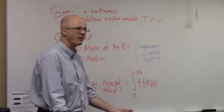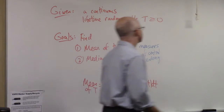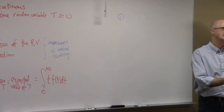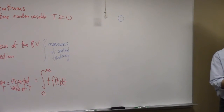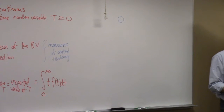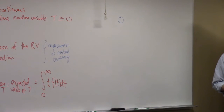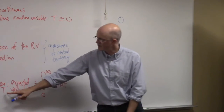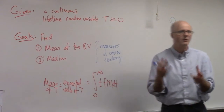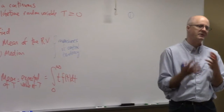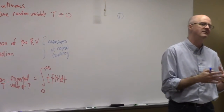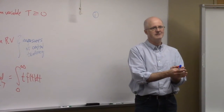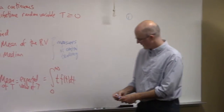Let's use this formula for our examples from last time. If you're taking the mean of capital T, why is T lowercase in the integral? Capital T is the name of the random variable itself — it represents how long this baby's going to live when they're born. Little t just represents time going by. Good question.